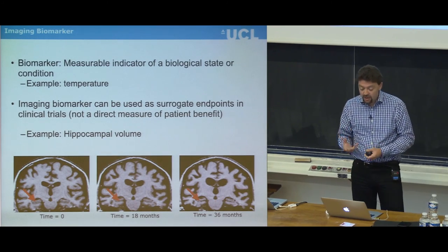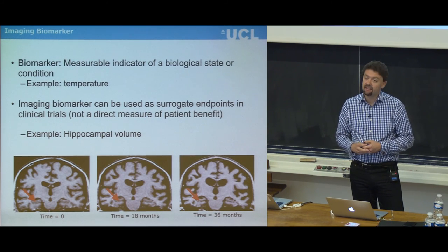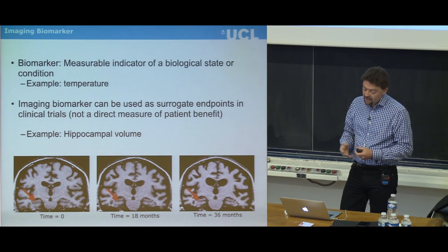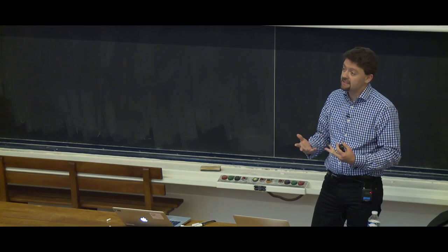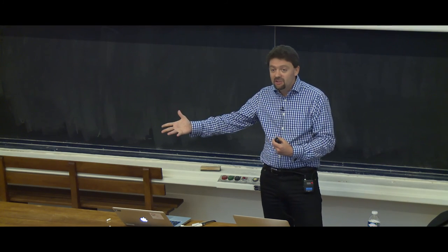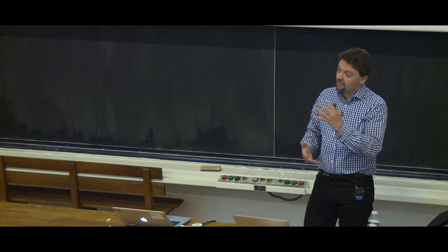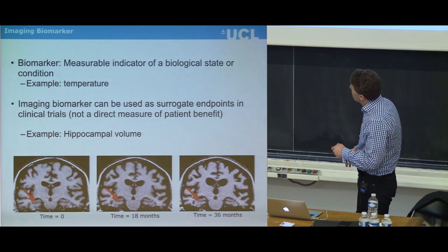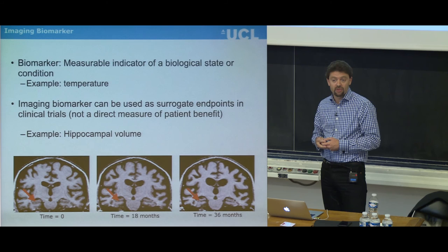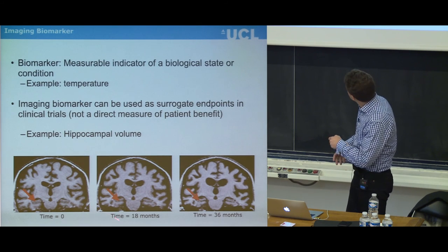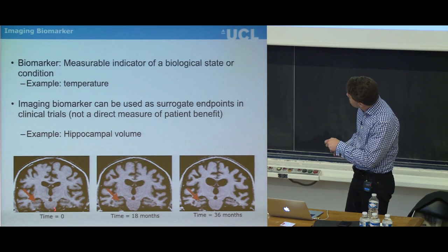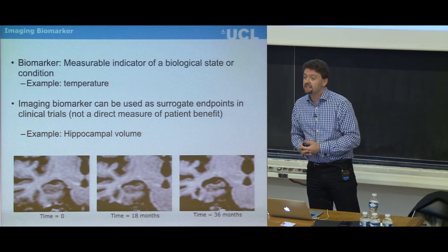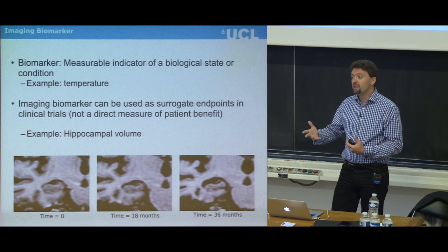One of the main developments we are doing is the development of what we call imaging biomarkers. The concept of a biomarker is a measure or indicator of a biological state or condition. If you just take your temperature, that's a biomarker. In the context of imaging, it will be considered a surrogate endpoint of the disease state. For instance, in the case of Alzheimer's disease, one surrogate endpoint can be the volume change of the hippocampus in the brain — that information is called an imaging biomarker.